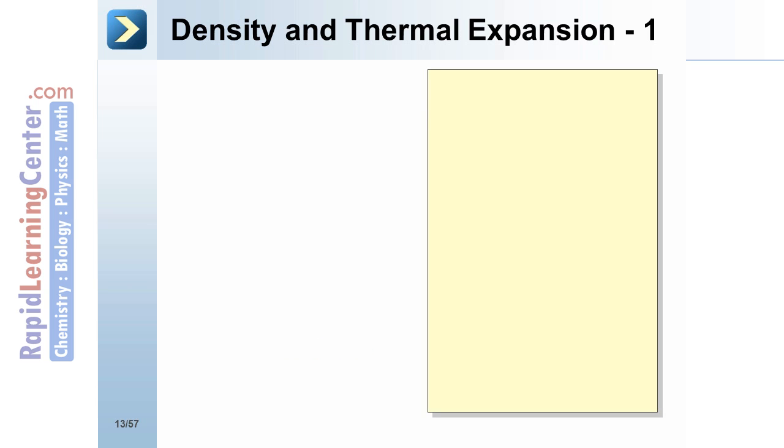Density and thermal expansion. First, density. Density is defined mathematically as the mass per unit volume. You probably know that gold has a much higher density than iron. It is very heavy per volume.